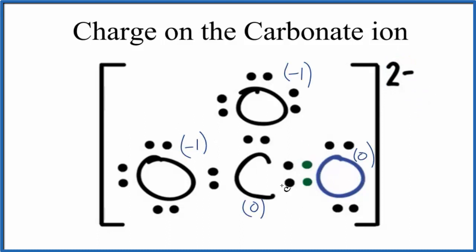So the carbon would be zero, and the double bonded oxygen, that would be zero as well. But these single bonds here, these oxygens with single bonds, they would be negative 1. Negative 1 and negative 1, that gives us the negative 2. So that's why we have this 2 minus as the charge on the carbonate ion.